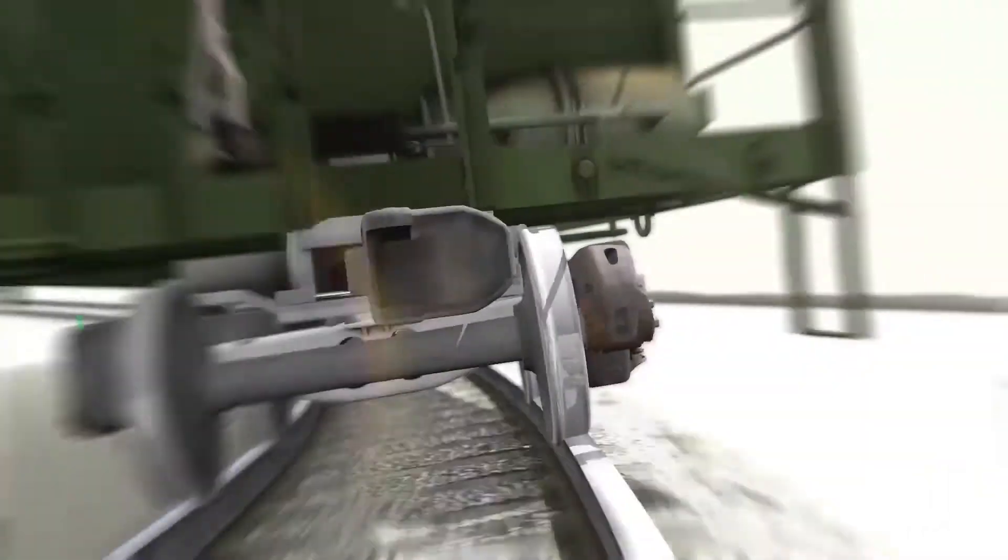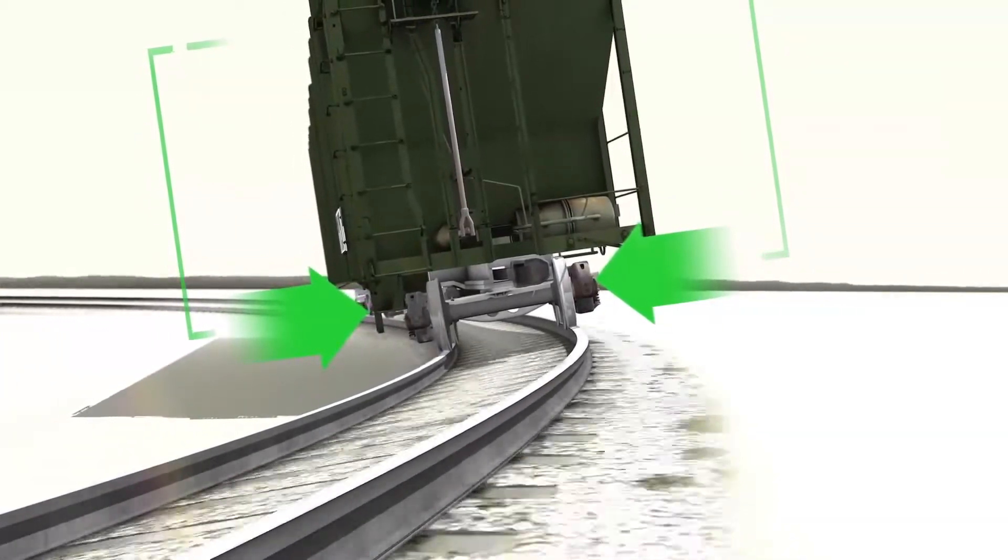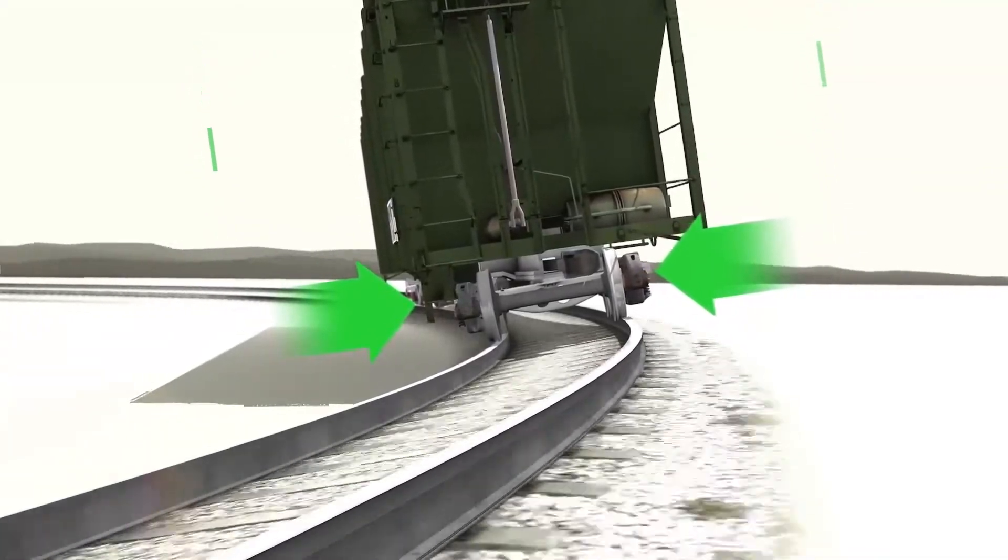This equalizes the vertical wheel loads on either side of the leading truck, represented by the green arrows. After the entire car is in the body of the curve, the car body becomes parallel with both trucks.